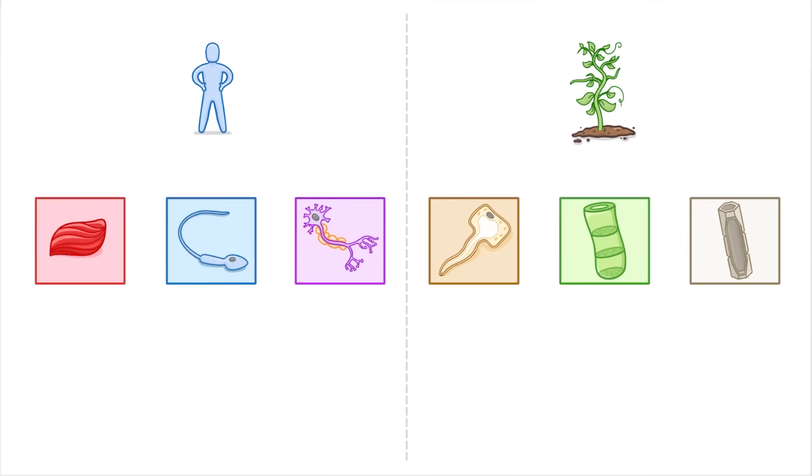Now if we consider any complex organism, whether it's an animal like a human or a plant like this pea plant, they're made up of loads of different types of cells.